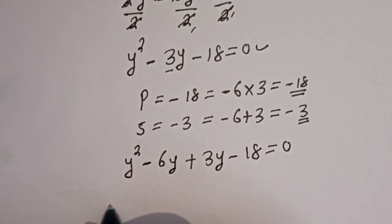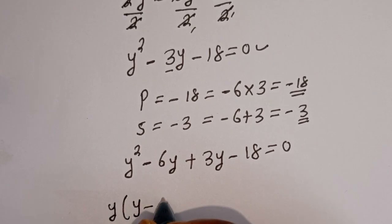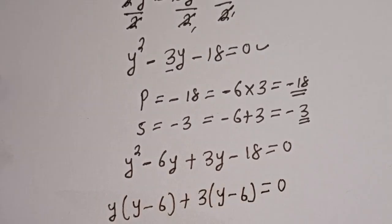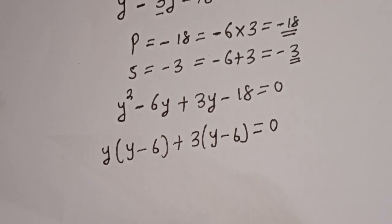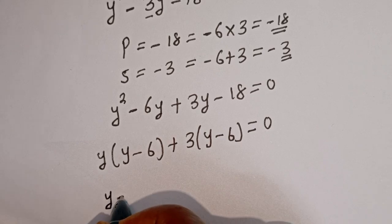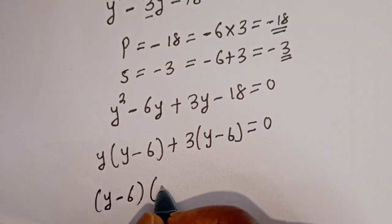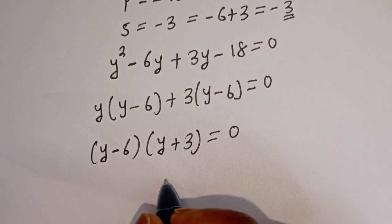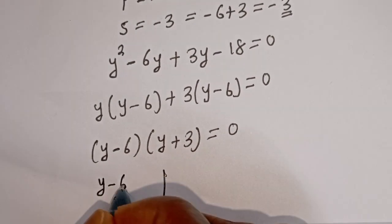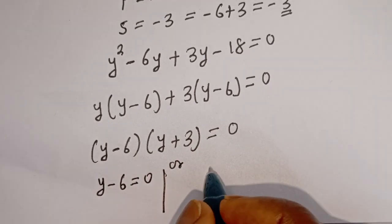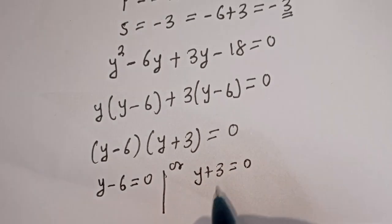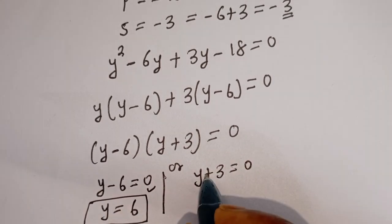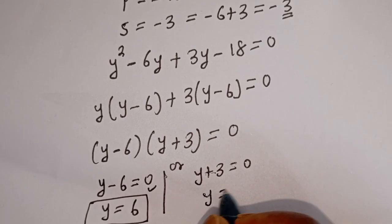Something is common here. We have y bracket y minus 6, plus 3 bracket y minus 6, is equal to 0. Then from here, y minus 6 is common. Bringing it out: y minus 6 bracket y plus 3 is equal to 0. There are two cases. The first case is y minus 6 equals 0, giving y equals 6. The second case is y plus 3 equals 0, giving y equals minus 3.